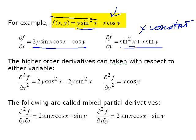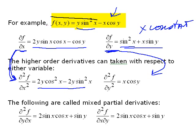We can continue to take derivatives. Taking the next derivative with respect to x gives terms like 2y cosine squared x minus 2y sine squared x. Taking the derivative of df/dy with respect to y: the first term vanishes because there's no y in it, and the second term gives x cosine y. These are noted f_yy and f_xx respectively.